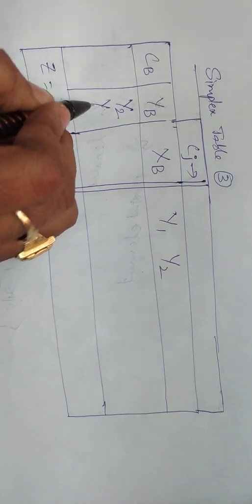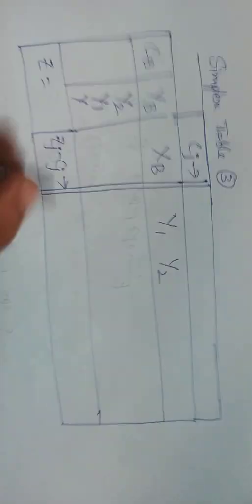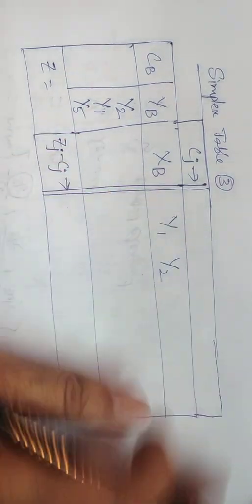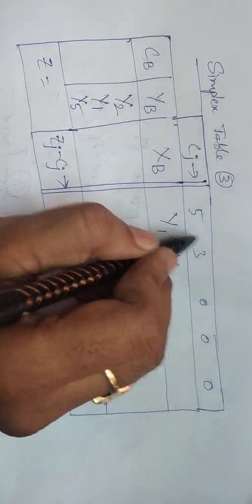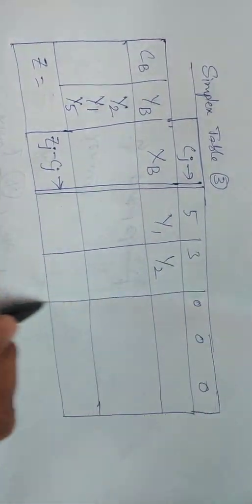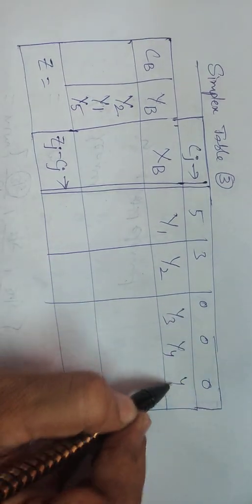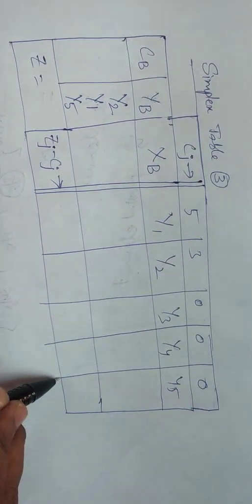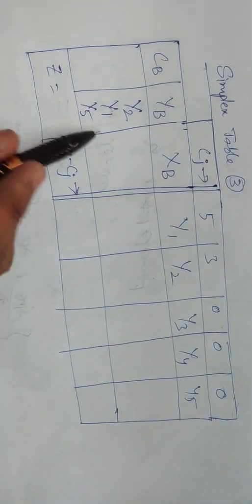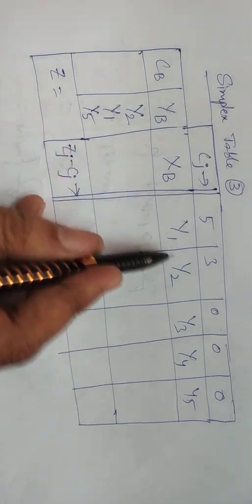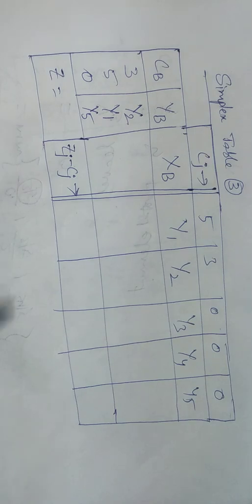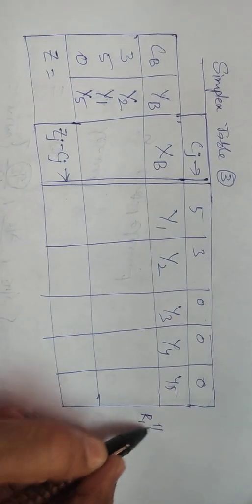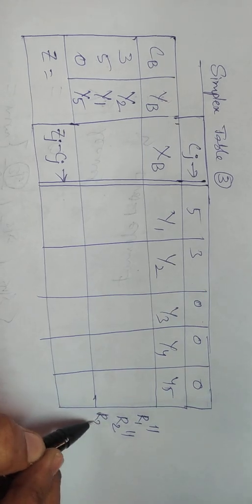In Simplex Table 3, Y2 replaces Y3. The basis now has Y2, Y1, and Y5. The corresponding costs are: Y2 cost = 3, Y1 cost = 5, Y5 cost = 0. We need to perform three row operations: R1 double dash, R2 double dash, and R3 double dash.